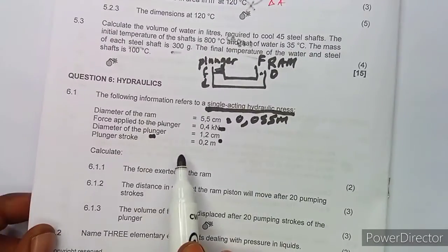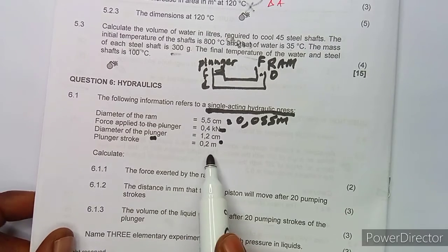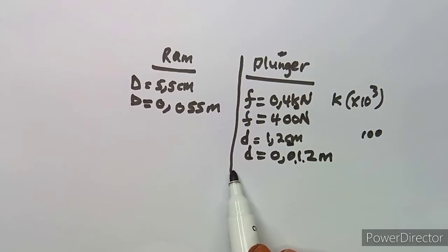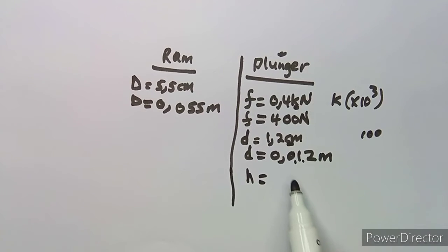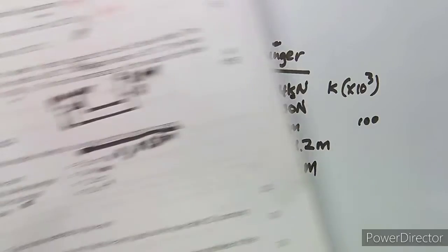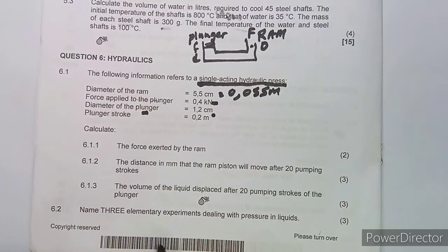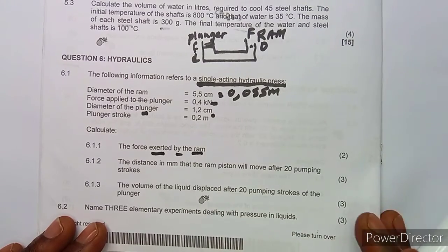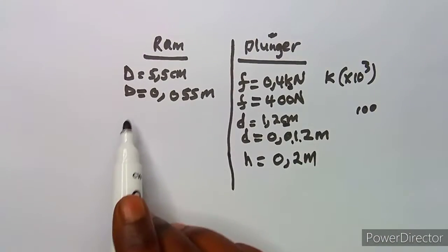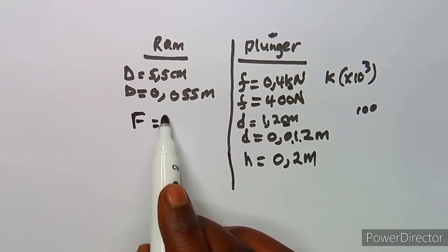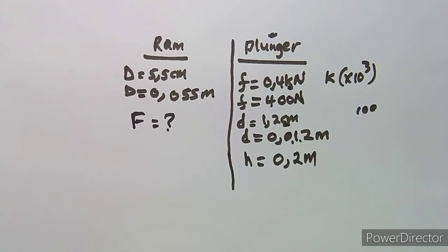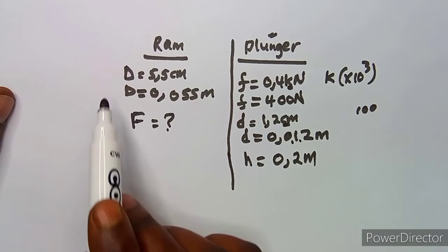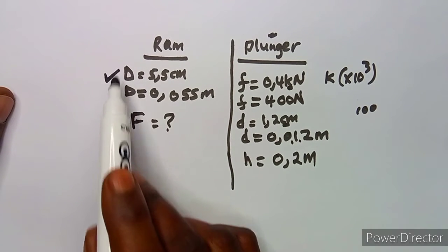The plunger stroke is the height on the plunger. We are given a plunger stroke height of 0.2 meters, so this one is already in meters — no need to convert. Now the question asks us to calculate the force accepted by the ram. We know there is a relationship between the diameter, the force on the ram, and the diameter and force on the plunger.